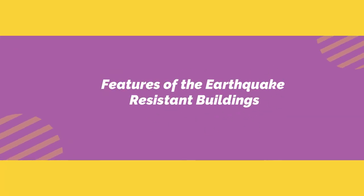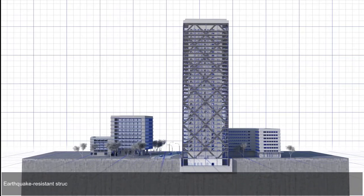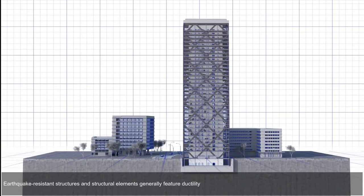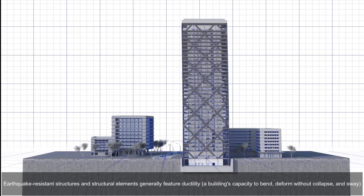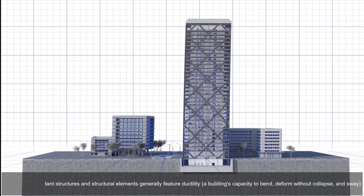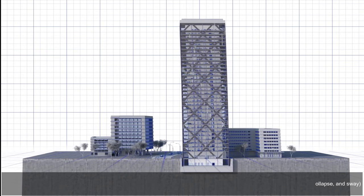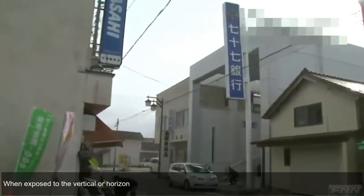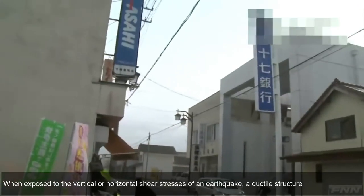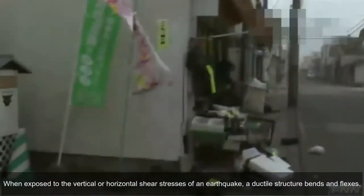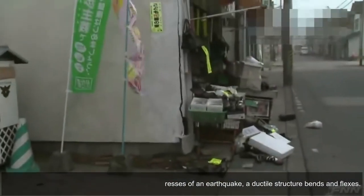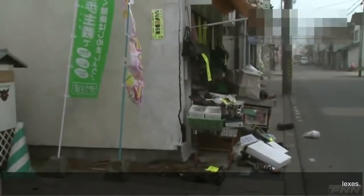Features of earthquake-resistant buildings. Earthquake-resistant structures and structural elements generally feature ductility — a building's capacity to bend and deform without collapse and sway. When exposed to the vertical or horizontal shear stresses of an earthquake, a ductile structure bends and flexes.